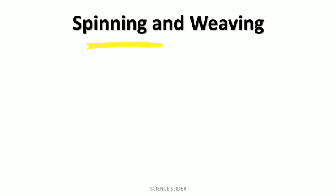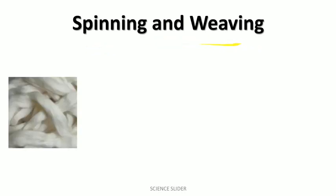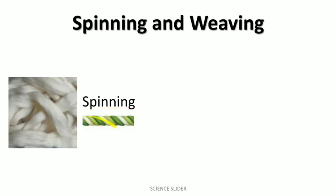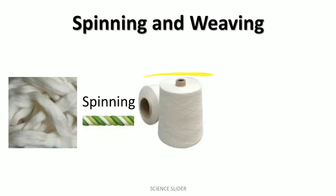Now moving ahead, we have spinning and weaving. Watch here — this is the cotton fiber. If we do spinning of the cotton fiber, spinning means twisting. When we do twisting of the fibers, the fibers get converted into thread because of the twisting.